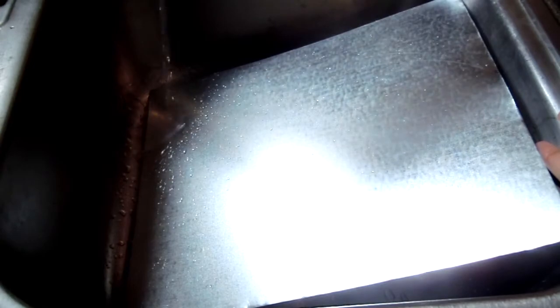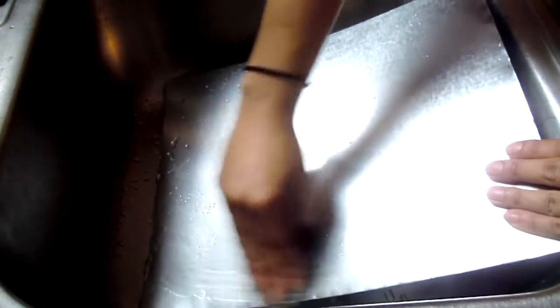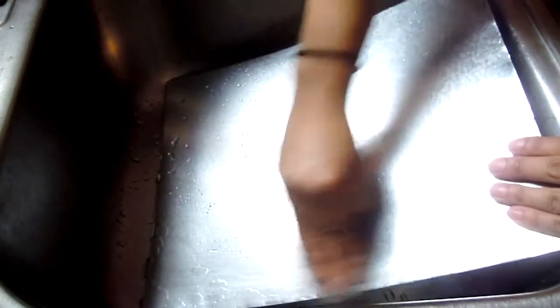Then once you're done with that, just take some fine grit sandpaper or some steel wool and just kind of soak the surface of the sheet metal with water and then buff out any scratches that might be on the surface.